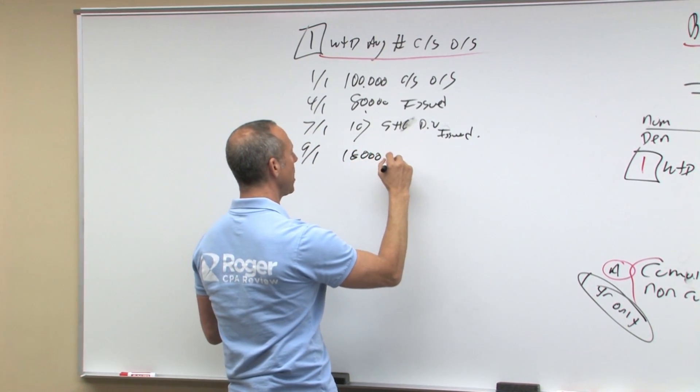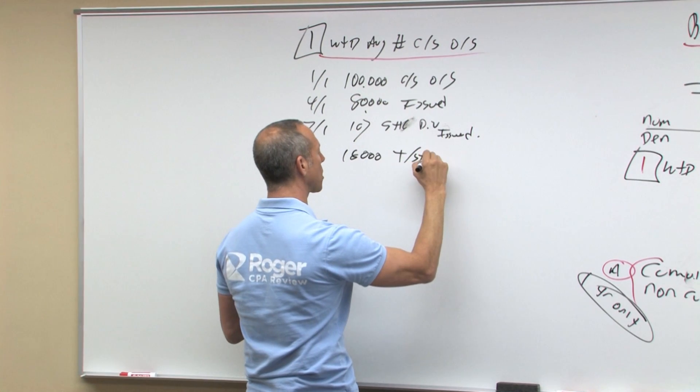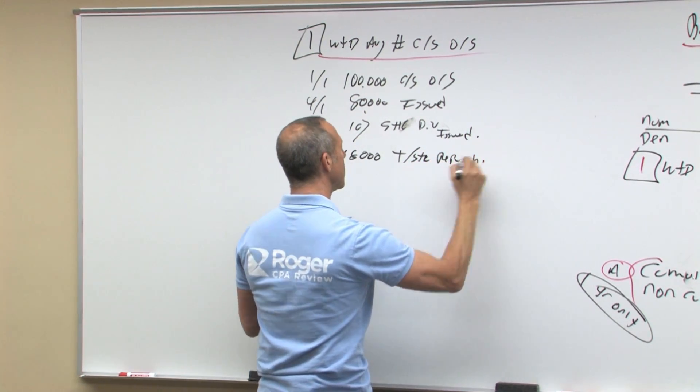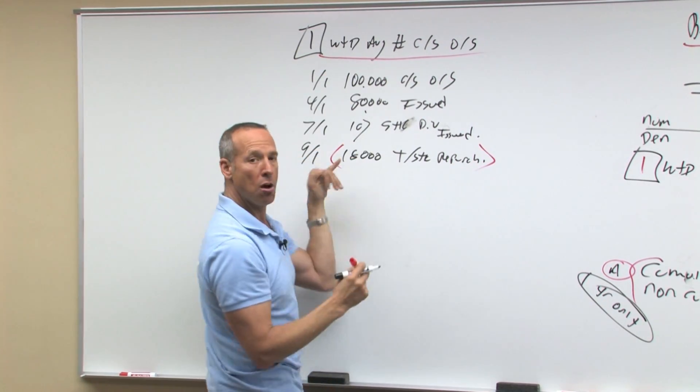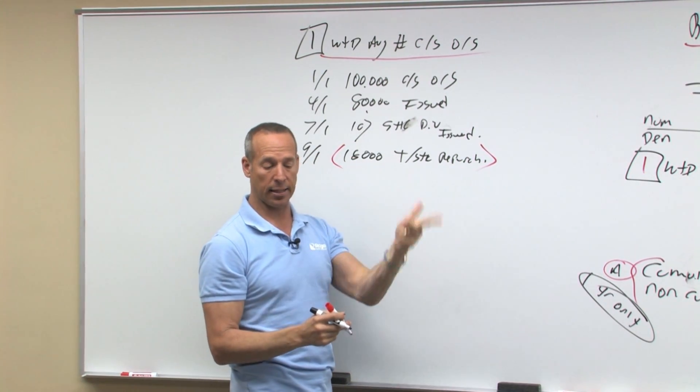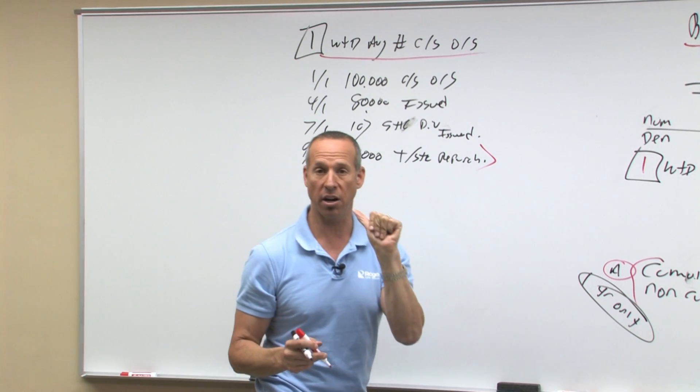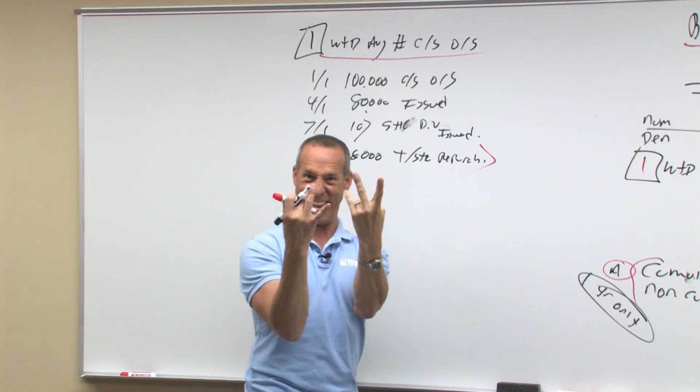Then on September 1st, 18,000 shares of treasury stock are repurchased. Now what does that mean? That means of the 100, 18 is not outstanding for 9, 10, 11, 12, four twelfths of the year. And you're allowed to bring your fingers to the exam.